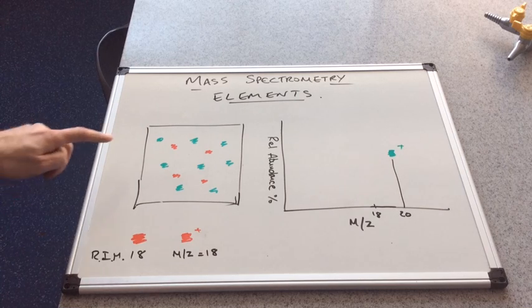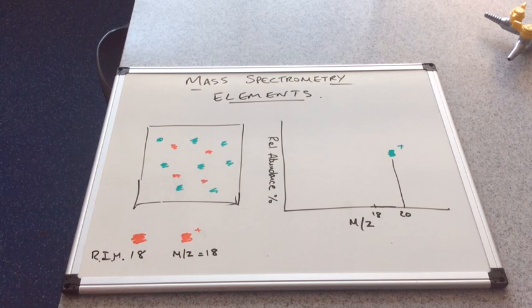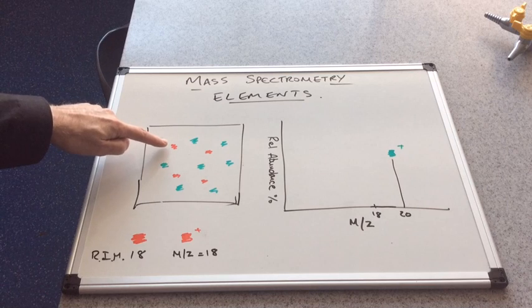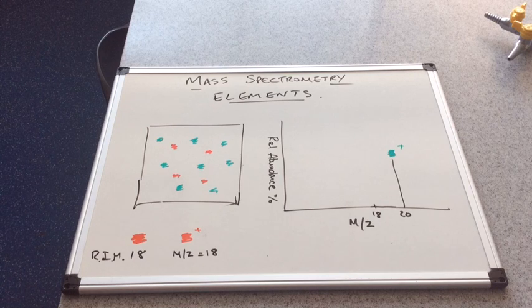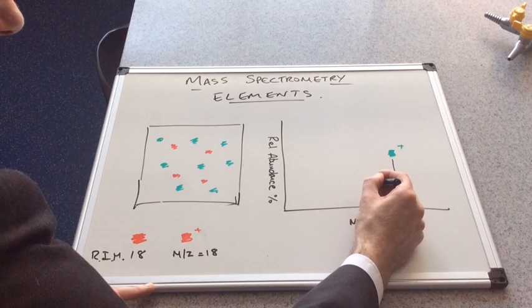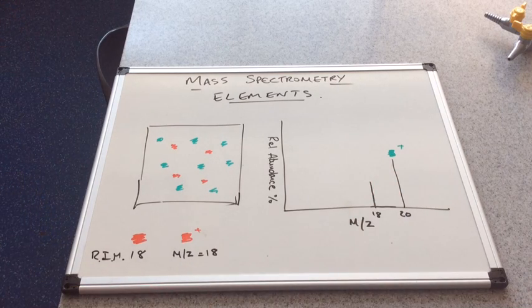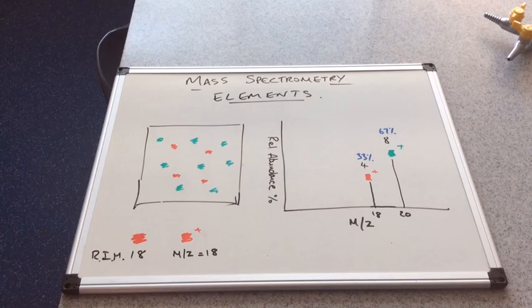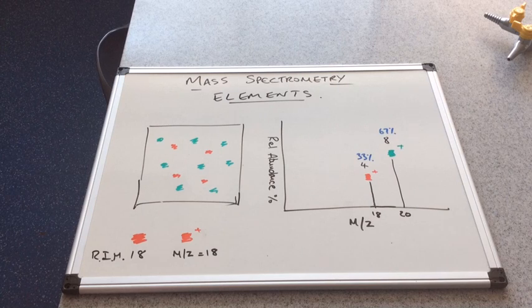If we count up the number of green isotopes present in this sample, you can see we have 8. The height of this peak corresponds to 8 isotopes. If we count up the red atoms, there are only 4. The spectrum would show us that by drawing the peak half the height of the 21.